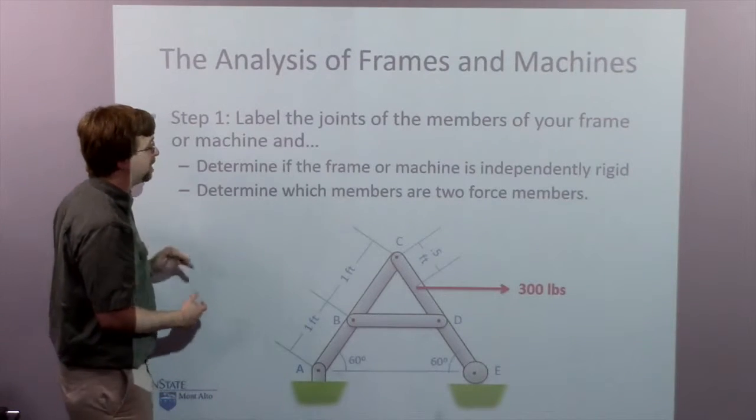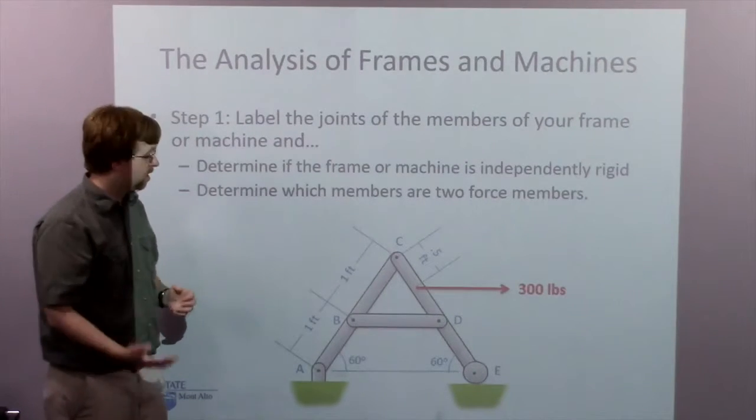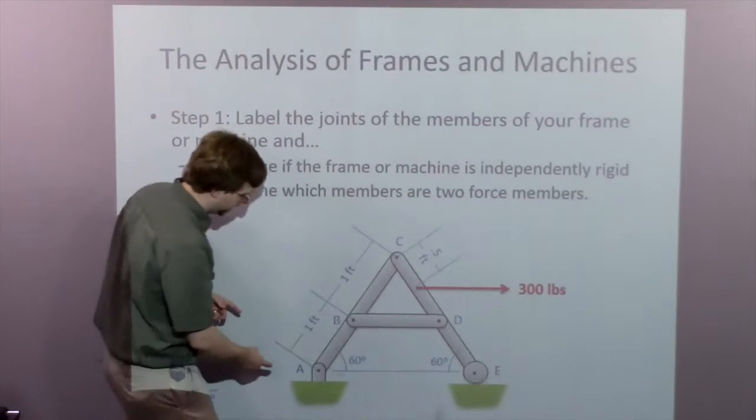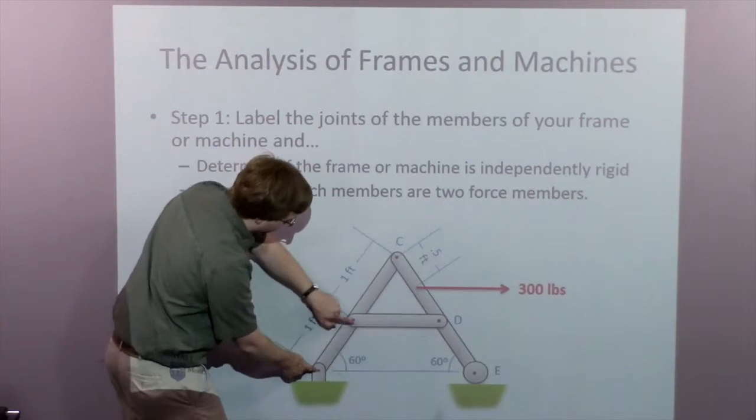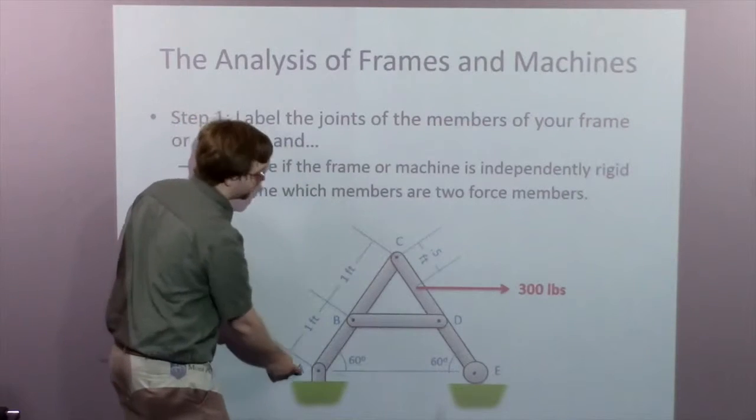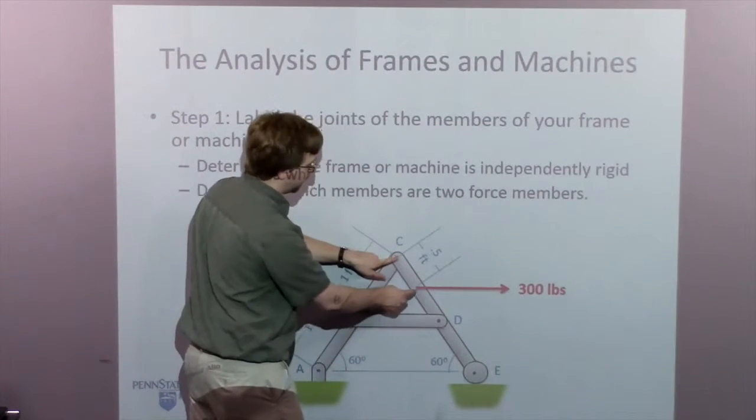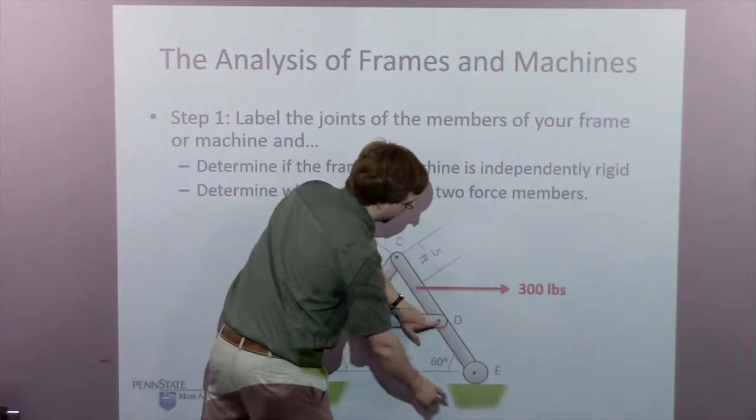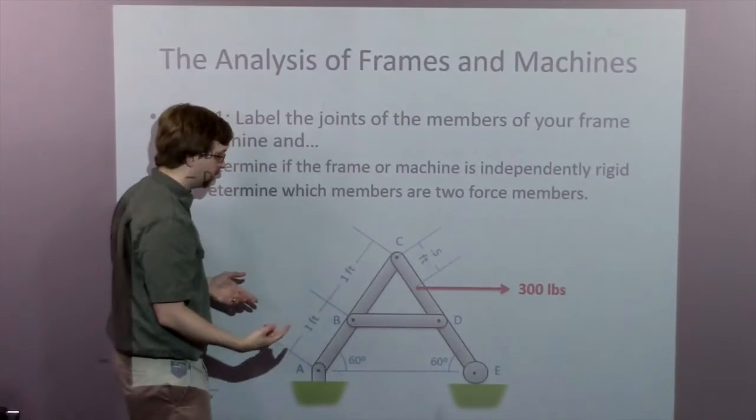And I also need to determine which members are two-force members, if any. So member ABC, I've got forces here, forces here, forces here. So this is not a two-force member. Member CDE, I've got forces up here, forces here, forces here, and forces here. Not a two-force member.